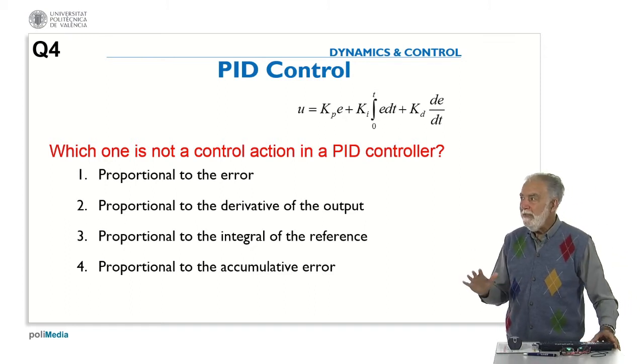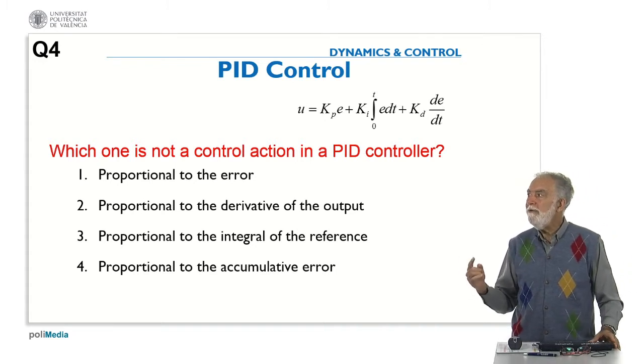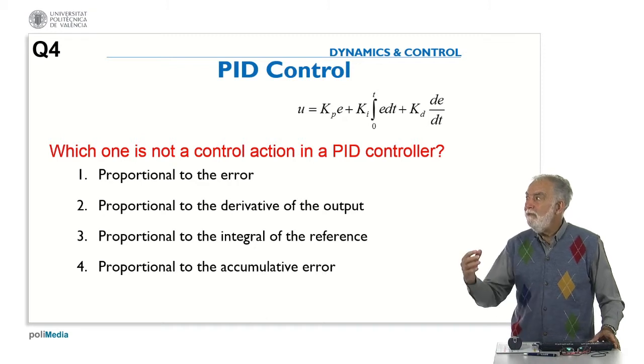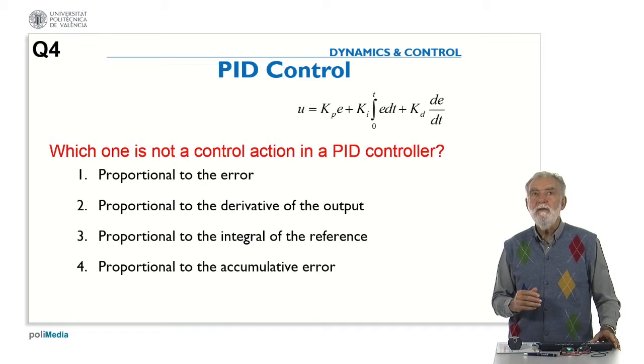This is the general idea of PID control, where the control is generated based on the actual error, the trend, which is the derivative of the error, and the past values of the error, which is the integral.